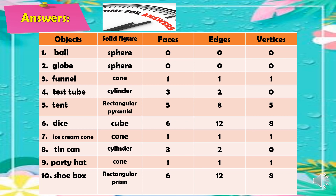Number 6 is a dice — an example of a cube with 6 faces, 12 edges, and 8 vertices. Number 7 is an ice cream cone — a cone with 1 face, 1 edge, and 1 vertex. Number 8 is a can — a cylinder with 3 faces, 2 edges, and 0 vertices. Number 9 is a party hat — a cone with 1 face, 1 edge, and 1 vertex. Number 10 is a shoebox — a rectangular prism with 6 faces, 12 edges, and 8 vertices.